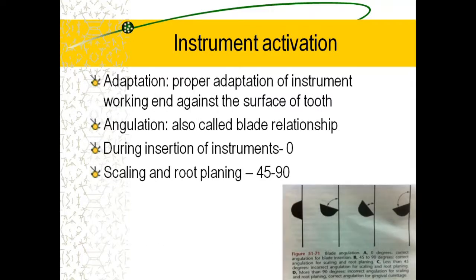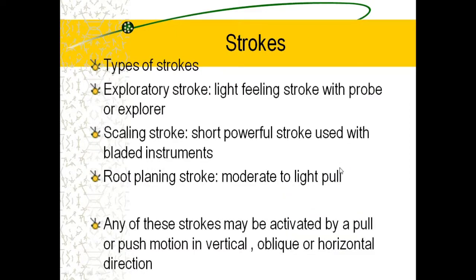Instrument activation includes adaptation and angulation. Adaptation refers to the proper placement of the instrument working end against the surface of the tooth. Angulation, also called blade relationship: during insertion of the instrument, the angulation should be 0 degrees, and for scaling and root planing, the angulation should be 45 to 90 degrees. Stroke types include: exploratory stroke — a light feeling stroke with a probe or explorer; scaling stroke — short powerful strokes used with a bladed instrument; and root planing stroke — moderate to light pull strokes. Any of these strokes may be activated by pull or push motion in vertical, oblique, or horizontal directions.